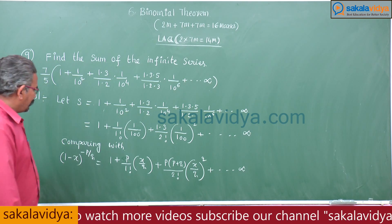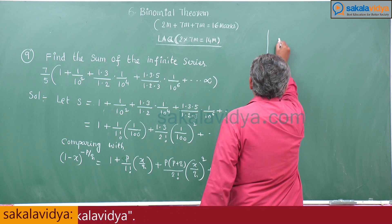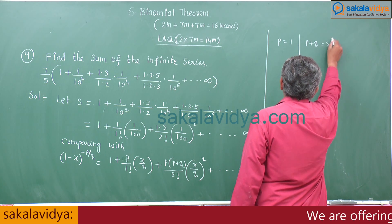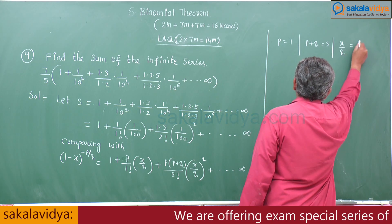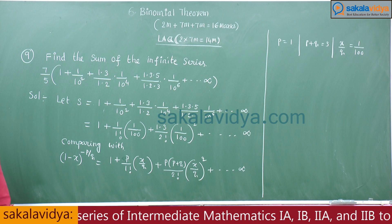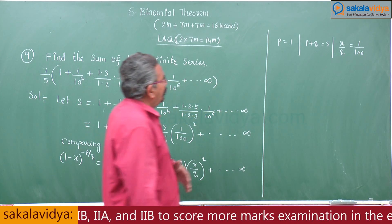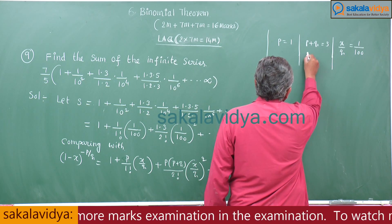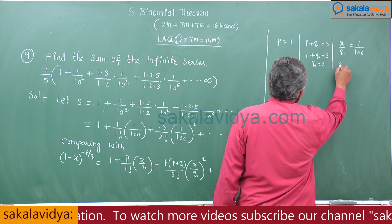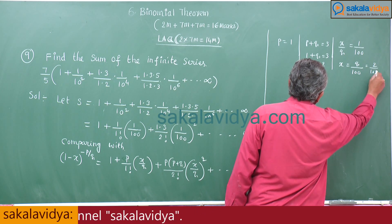Comparing, we get p = 1, p + q = 3, and x/q = 1/100. From p + q = 3: q = 2. From x/q = 1/100: x = q/100 = 2/100 = 1/50.